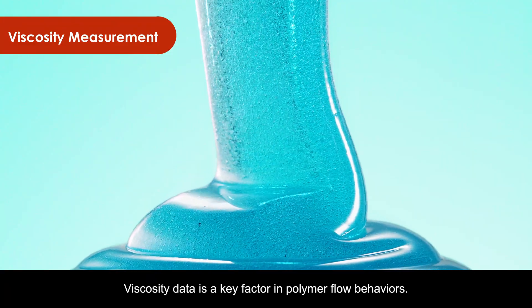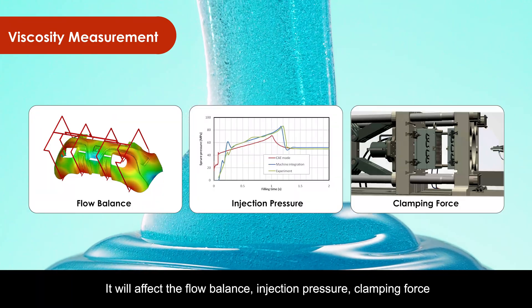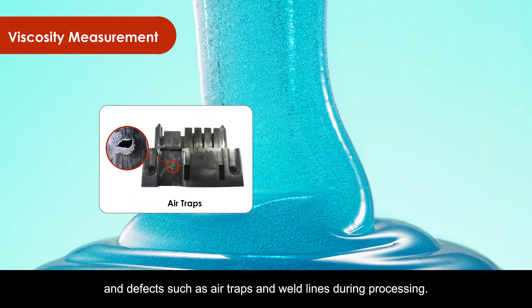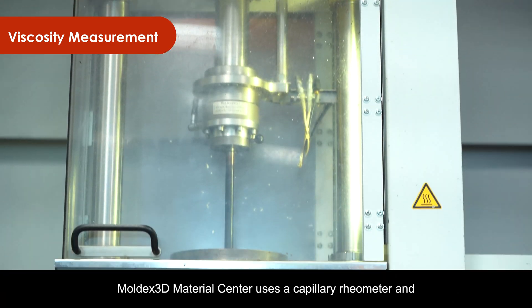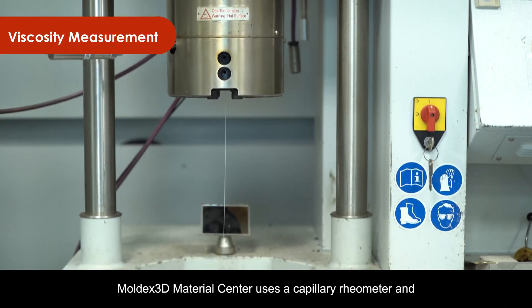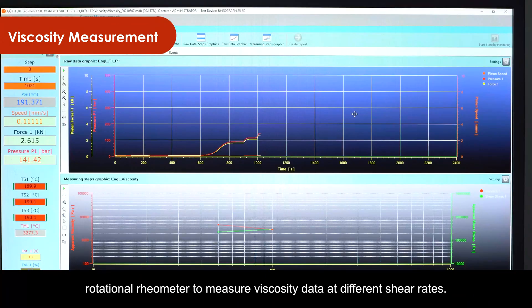key factor in polymer flow behavior. It affects flow balance, injection pressure, clamping force, and defects such as air traps and weld lines during processing. Moldex3D Material Center uses capillary rheometers and rotational rheometers to measure viscosity data at different shear rates.